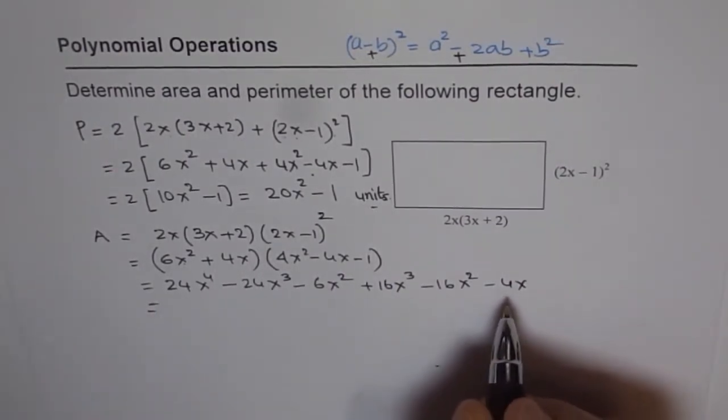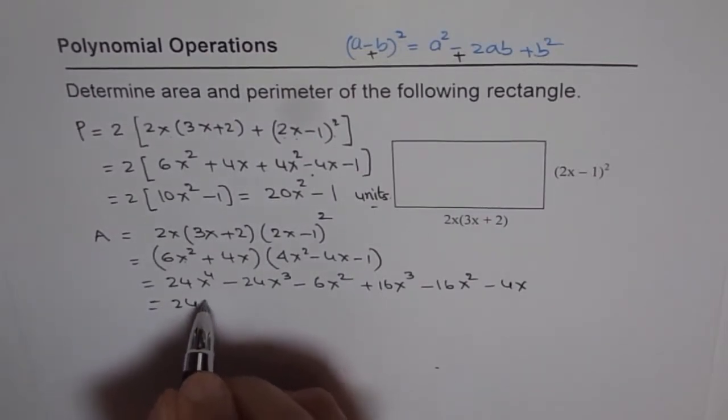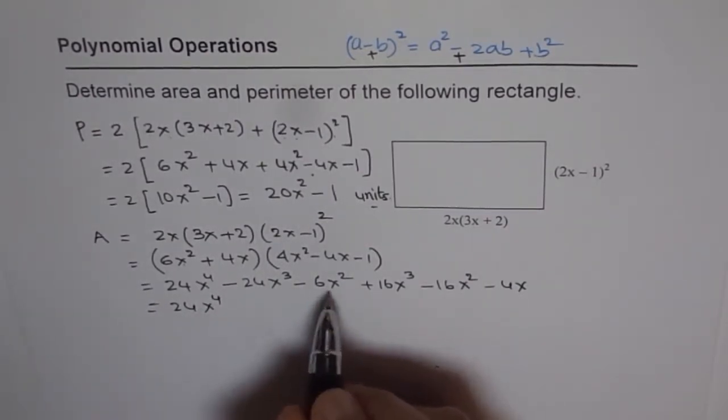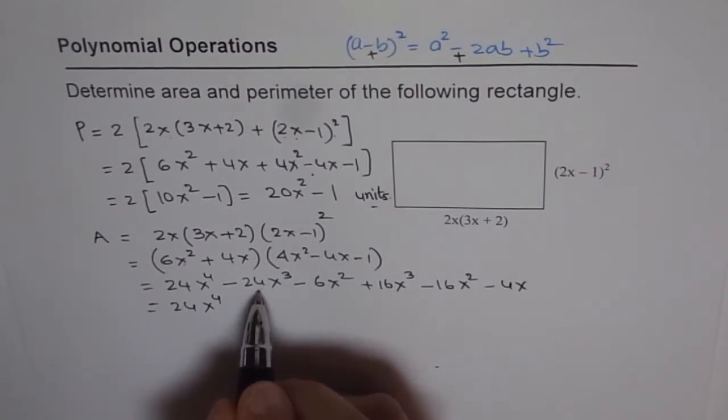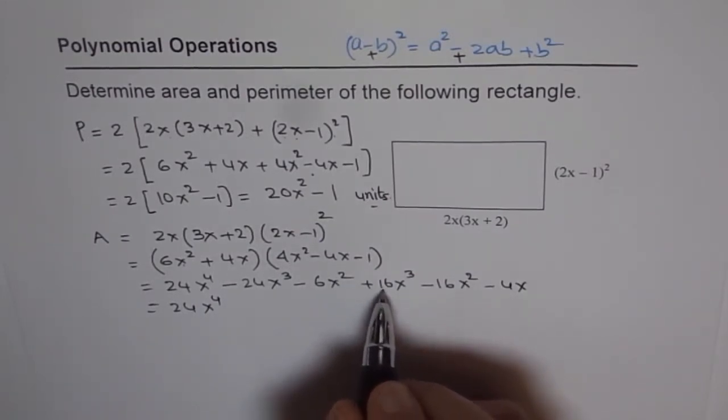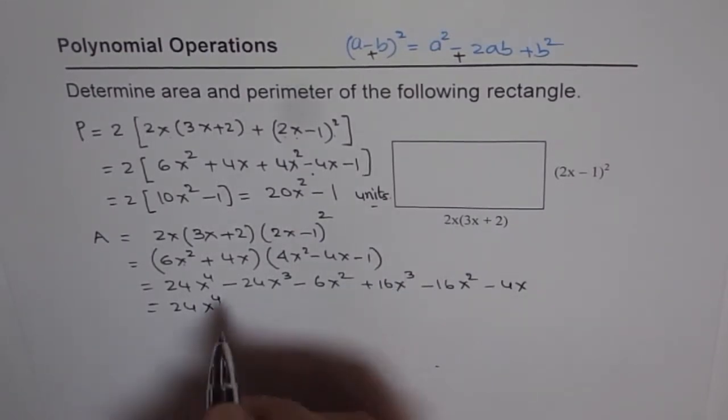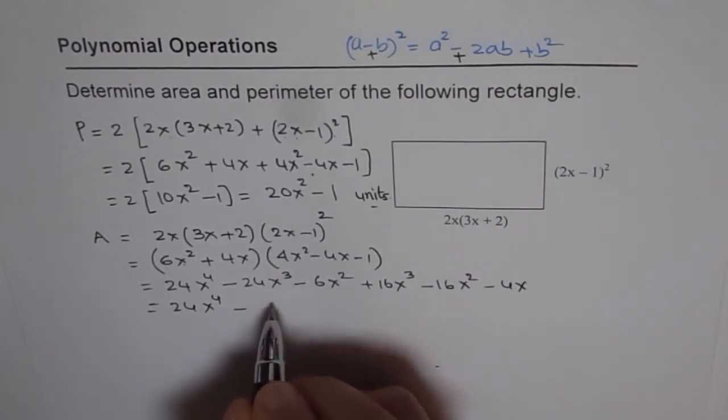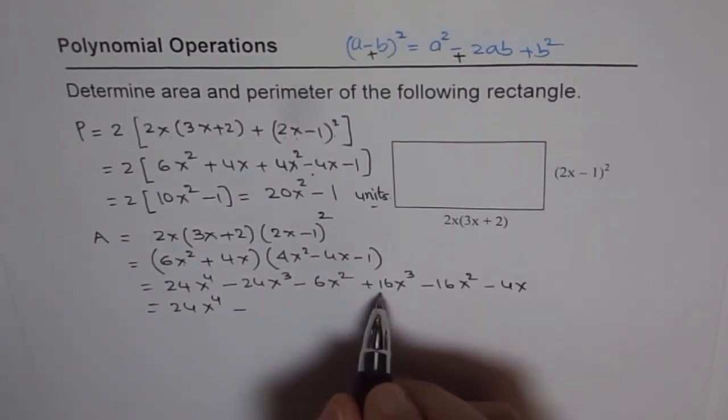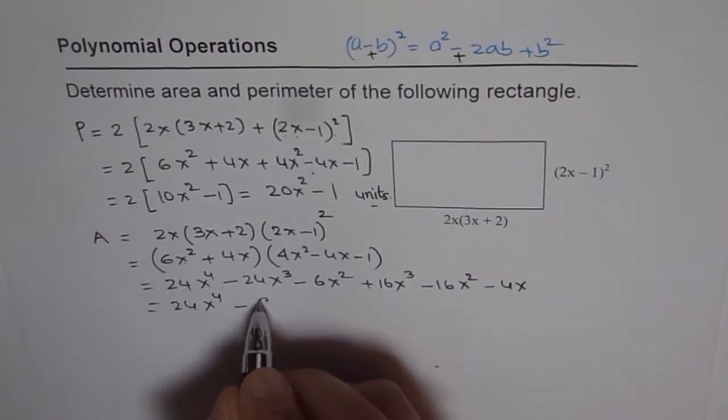Now we can combine the like terms. We have 24x to the power of 4. As far as the cubes are concerned, we have minus 24x cubed and plus 16x cubed. This is with minus sign. So when we combine it, we get 24 with minus plus 16 gives us minus 8x cubed.